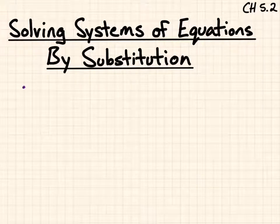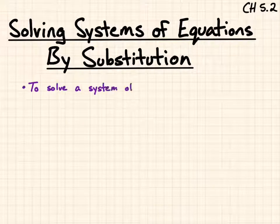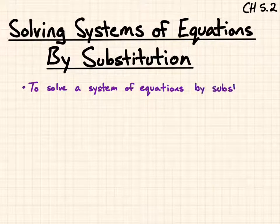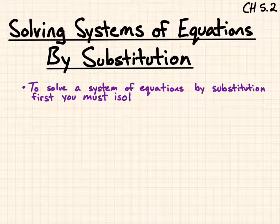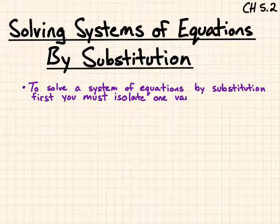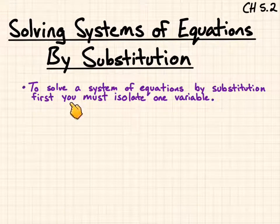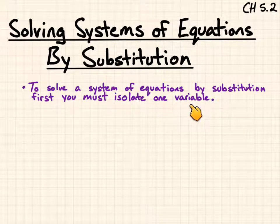To solve a system of equations by substitution, there are really three main steps. First, you must isolate one variable so you get it by itself.